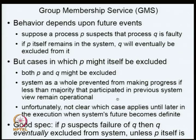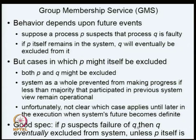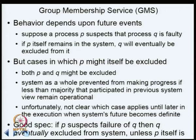Both P and Q might be excluded because each suspects the other, preventing the system as a whole from making progress. If less than a majority of those that participated in the previous system remain operational, you cannot make progress because the quorum is not established. Instead of the model where 'if P remains, Q will be excluded,' people have refined this to: 'if P suspects failure of Q, then Q is eventually excluded from the system unless P itself is excluded.' This turns out to be a slightly better specification.